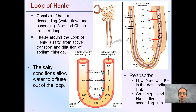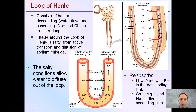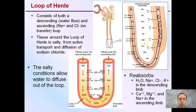Continuing on, we have our loop of Henle. Remember, there are two parts: a descending limb, which is important for water flow, and an ascending limb, which handles ion transfer. The tissue around the loop of Henle is salty from active transport and diffusion of sodium and chloride ions. These salty conditions allow water to diffuse out of the loop. Active transport moves the ions, and osmosis moves the water.